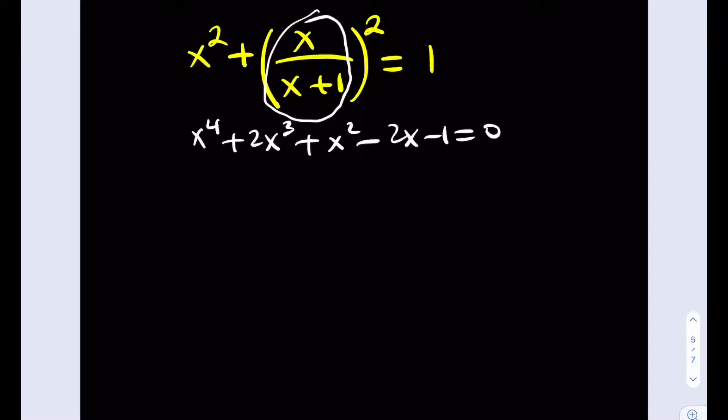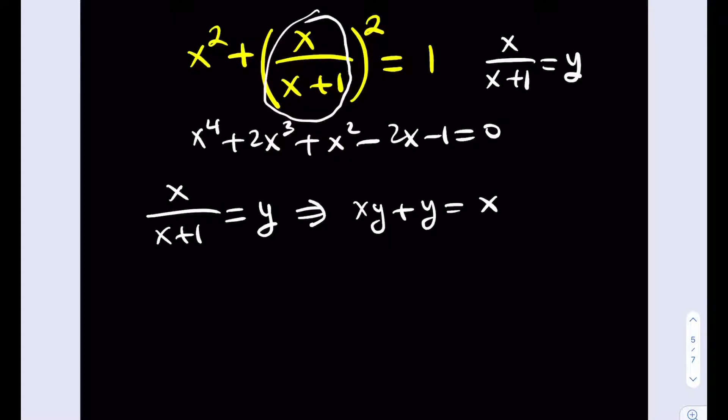Okay, so I'm going to call x over x plus 1 equal to y. So I'm going to use substitution here in an interesting way. And when I do that, you're going to notice something interesting happening. If I call this expression y here, then I'm going to be getting xy plus y equals x. So from here, I'll be getting one of these equations.